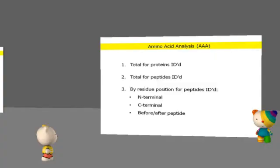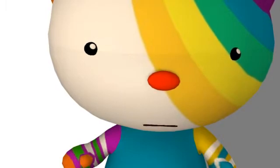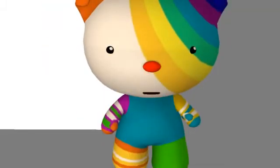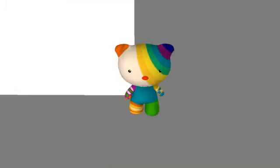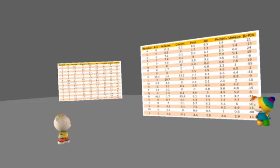Amino acid analysis of the identified proteins and peptides can be a very valuable tool in understanding a data set. AAA can be calculated in a number of different ways, giving, for example, the composition of the proteins or peptides identified. It can also be performed on specific positions on the protein or peptide, relative to the enzymatic cleavage site. The most effective way to use AAA information is through a spreadsheet, but it is hard to properly present that type of information in a talk.